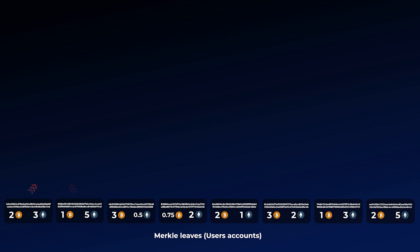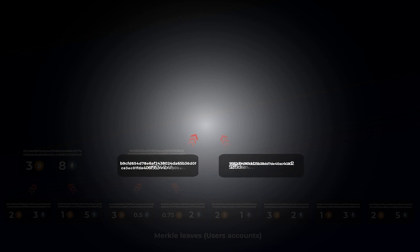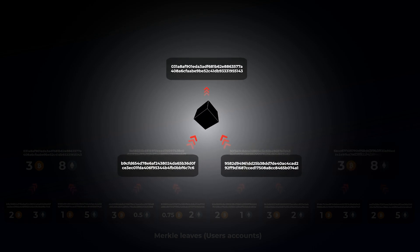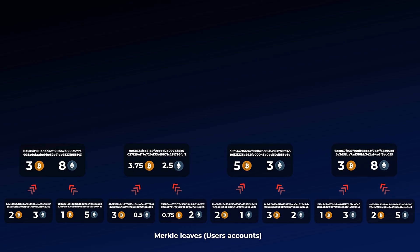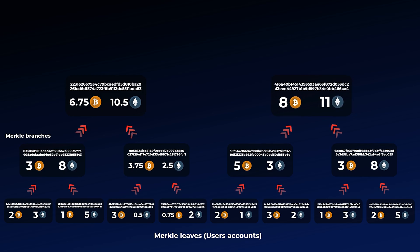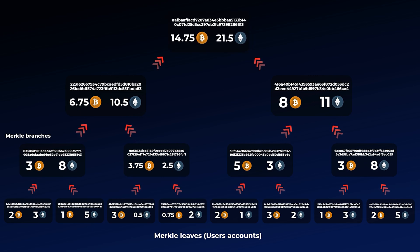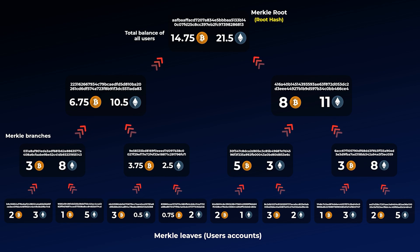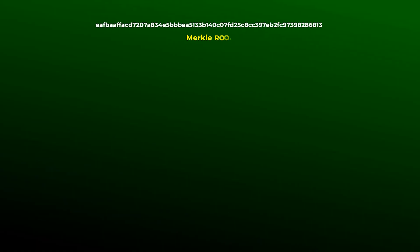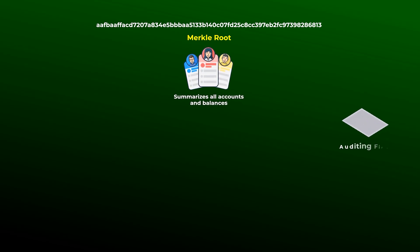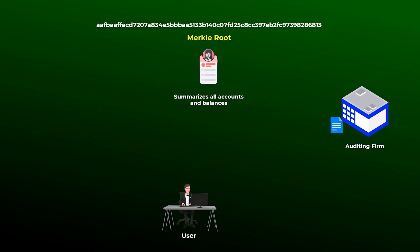After that, the balances of each two sibling leaves or accounts are added together, and the two hashes go into the hash function again to get a new hash. This new hash with the sum of the two balances forms what is known as a Merkle branch. After we get the first layer of branches, we do the same thing again by adding the balances of each two sibling branches and hashing the two hashes to get the next layer of branches. We continue doing this until we get the final hash, called the Merkle root or the root hash, and with it we get the total balance of all users' accounts — the total liabilities the exchange owes to its users. This Merkle root is the hash that summarizes all users' accounts and their balances, and it is published by the exchange and the auditing firm after the audit is completed.